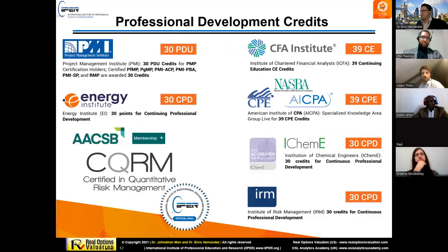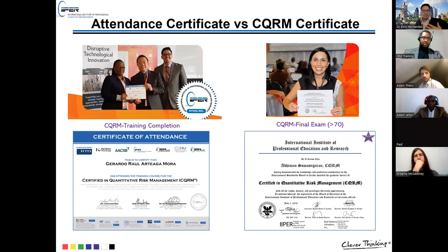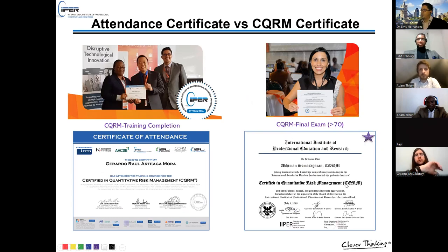We work closely with other international professional bodies including the IRM, which provides CPDs after completing this training. As the main output behind this professional accreditation: when you complete the training, you receive a certificate of attendance with CPDs; and when you pass the final exam, you receive the Level 7 professional qualification — the CQRM accreditation — endorsed by the Education Commission, the Ministry of Education of the United States.